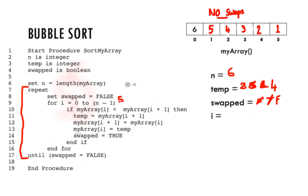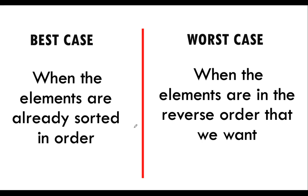The last thing to look at is the best case and worst case scenario of the bubble sort. The best case occurs when all elements in the array are already in sorted order — you do one pass, no swaps are made, and the algorithm finishes. That is the fastest way the bubble sort will run. The worst case scenario is when the elements are in the reverse order of what you actually want — if you want an ascending list but all numbers are in descending order, you'll have to make the most swaps and comparisons. That is the worst case scenario.